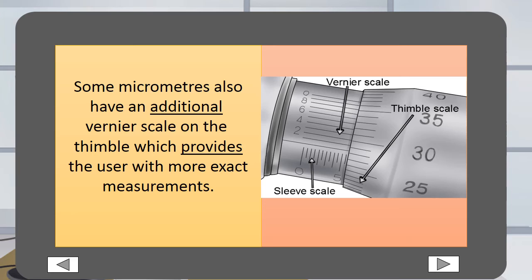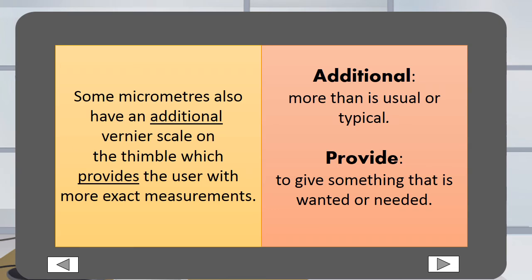Some micrometers also have an additional veneer scale on the thimble which provides the user with more exact measurements. Additional is more than is usual or typical. Provide is to give something that is wanted or needed.